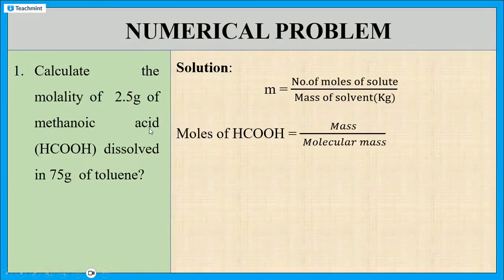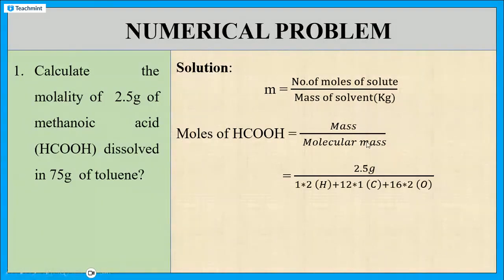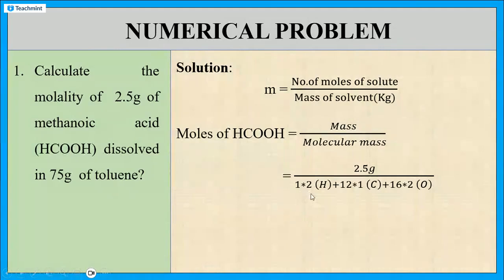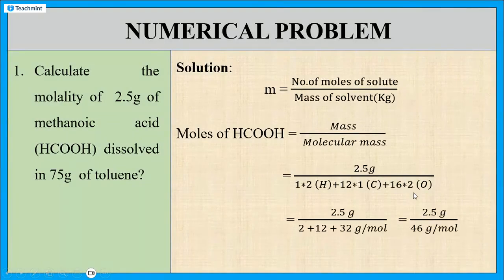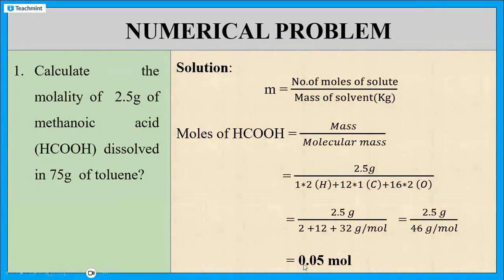The mass of methanoic acid is given in the problem: 2.5 grams. Now we calculate the molecular mass of methanoic acid. It is: atomic mass of hydrogen (1) times 2, plus atomic mass of carbon (12) times 1, plus atomic mass of oxygen (16) times 2, giving a molecular mass of 46 g/mol. So the number of moles equals 2.5 grams divided by 46 grams per mole, and the answer is 0.05 moles.